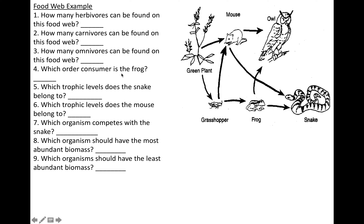Which order consumer is the frog? Start at the producer — that's zero — then one, two. The frog is a second order consumer. Which trophic level does the snake belong to? There's more than one way to get to the snake. One path: plant is zero, mouse is one, snake is two — second order. Another path: plant zero, grasshopper one, mouse two, snake three — third order. So the snake is both a second and a third order consumer.